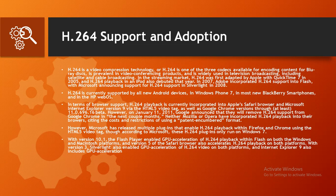H.264 is currently supported by all new Android devices, Windows Phone 7, most new BlackBerry smartphones, and HP webOS. In terms of browser support, H.264 playback is incorporated into Apple Safari and Microsoft Internet Explorer 9 via the HTML5 video tag, as well as Google Chrome through at least version 11. However, in January 2011, Google announced they would remove H.264 support from Chrome. Neither Mozilla nor Opera incorporated H.264 playback into their browsers, citing the cost and restrictions of using a patent-encumbered format. Microsoft released plugins enabling H.264 playback within Firefox and Chrome via the HTML5 video tag, though these plugins only run on Windows 7.